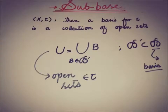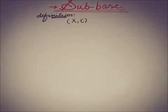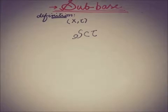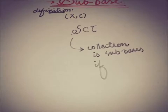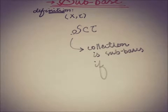Now, heading towards the definition of the sub-basis of a topology: if X and tau is a topological space, a collection S that is a subset of tau is said to be a sub-basis if the finite intersections of elements of this collection S form a basis of tau.